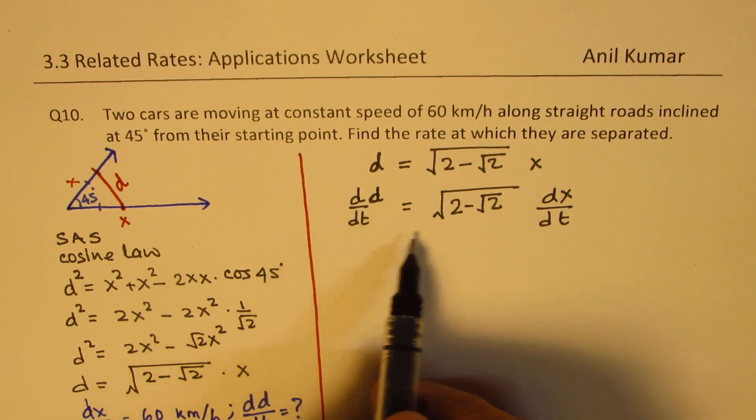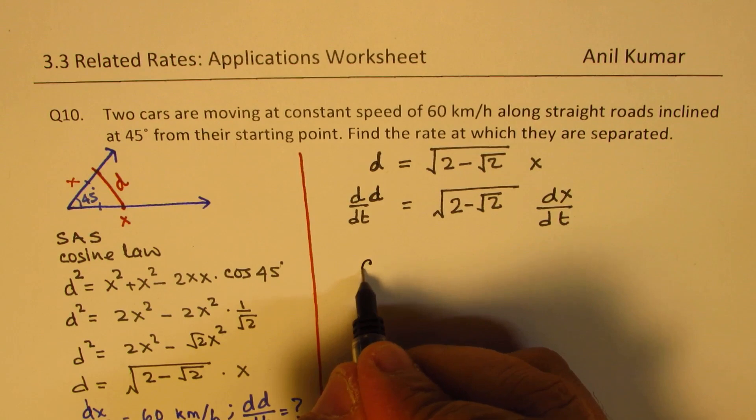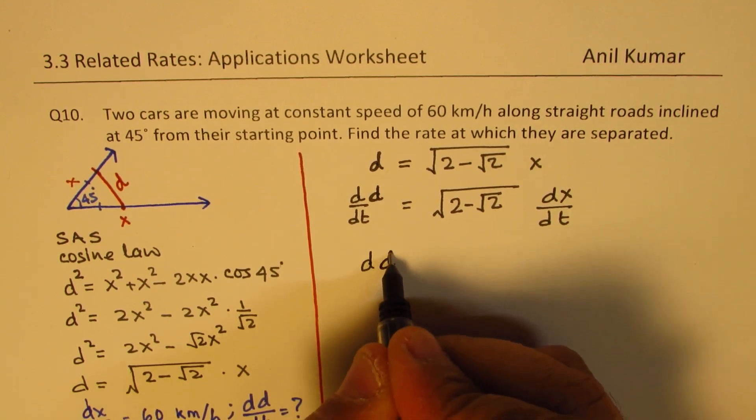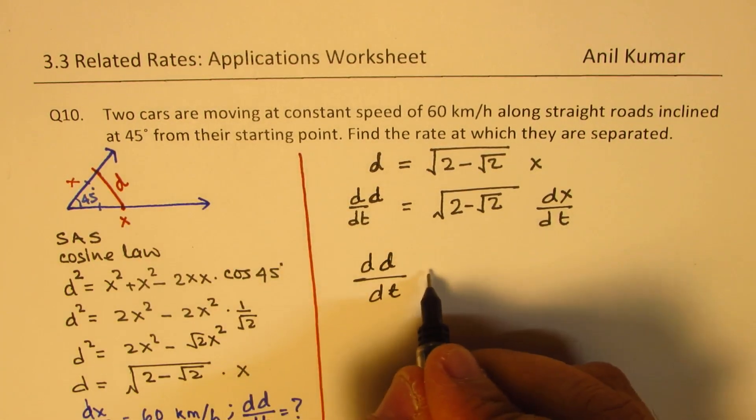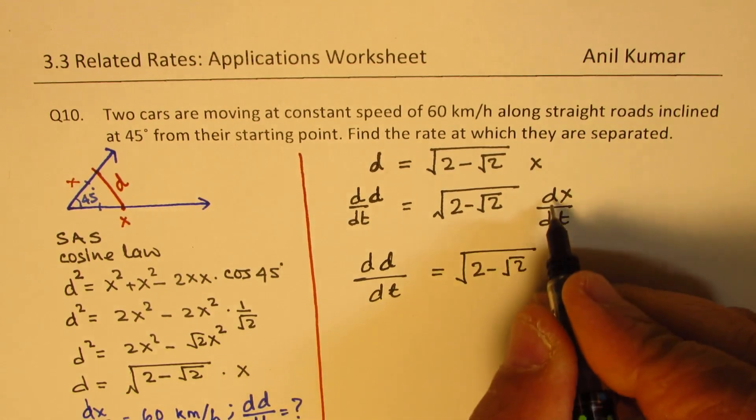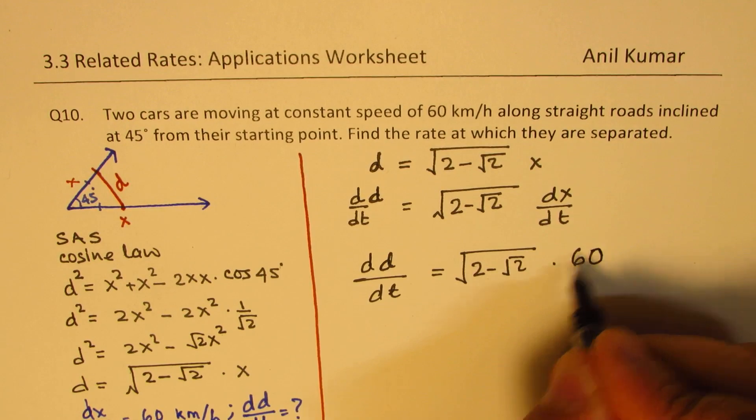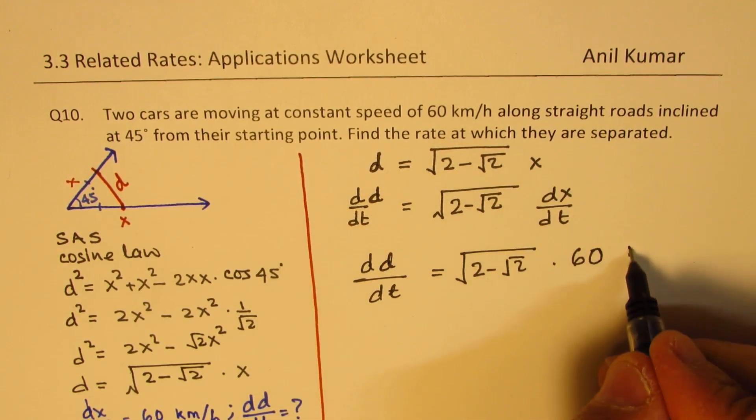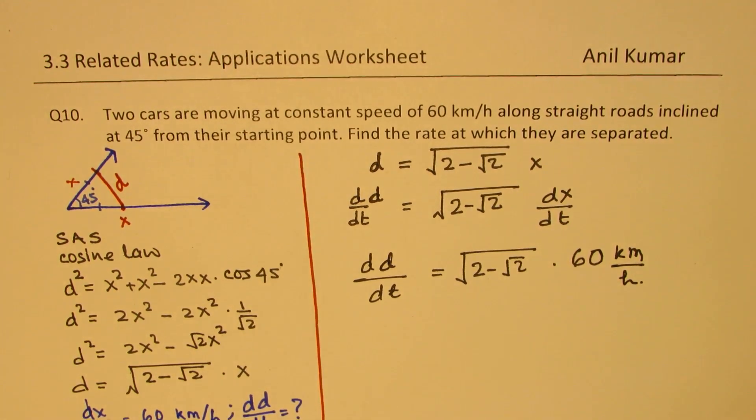So at any instance of time, that is how they are related. And dx dt is 60 for us. So we can say, so the separation d, this distance, change between the two cars is square root of 2 minus square root of 2, dx dt in our case is 60. And the units will be kilometers per hour. Is that clear to you? So that is how we'll actually solve this question. So I hope the steps are absolutely clear.